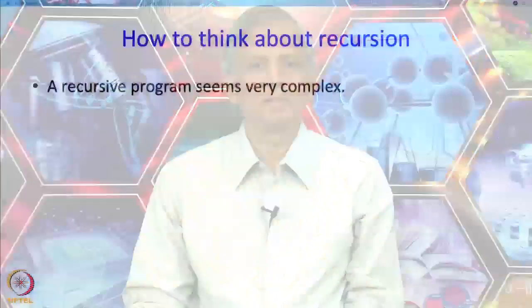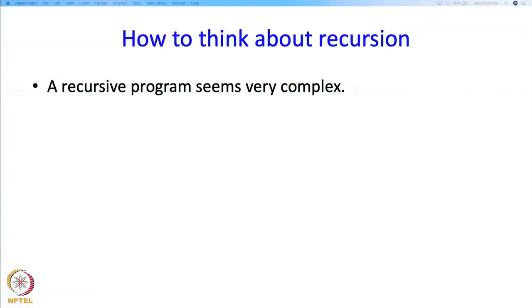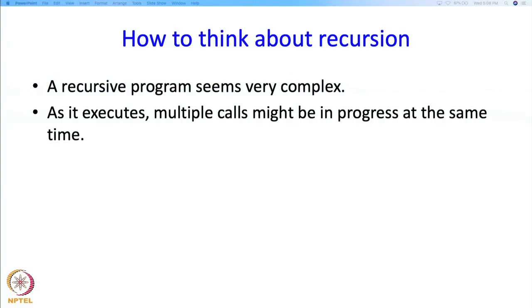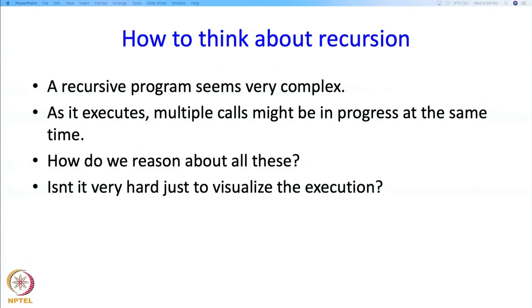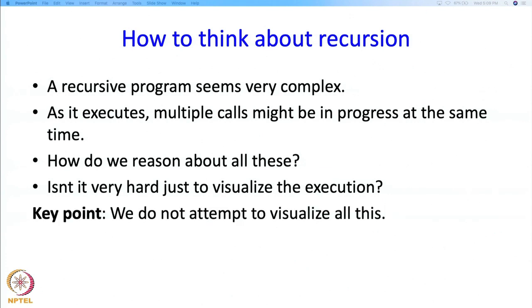How do you think about recursion? On the face of it, a recursive program seems very complex. When it executes, typically multiple calls are in progress. How do we reason about all of them? How do we even visualize what is going on? The good news is that we don't need to do any such visualization. There is a much more direct, simple way of thinking about recursive algorithms.